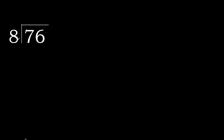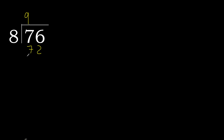76 divided by 8. 7 is less, therefore next. 76 is not less, therefore with 76: 8 multiplied by which number is nearest to 76 but not greater? 8 multiplied by 9 is 72. 72 is not greater — perfect. 76 minus 72 is 4.